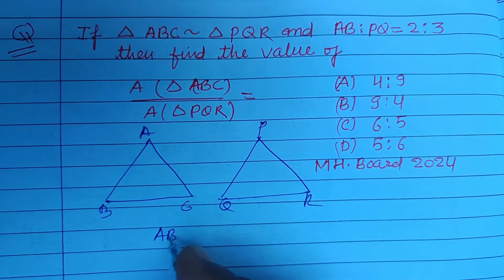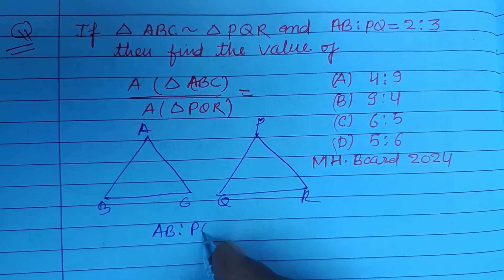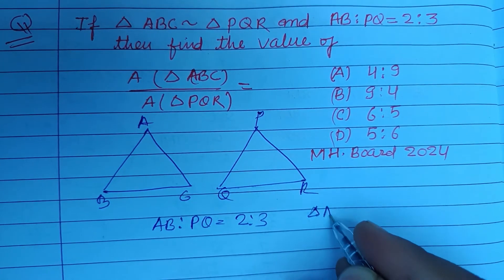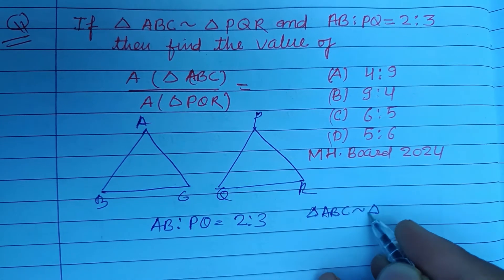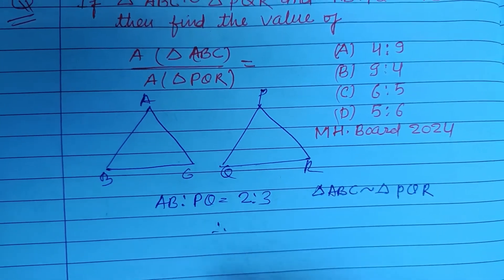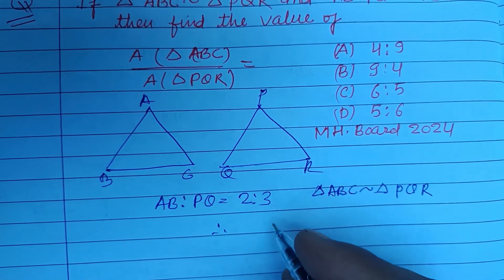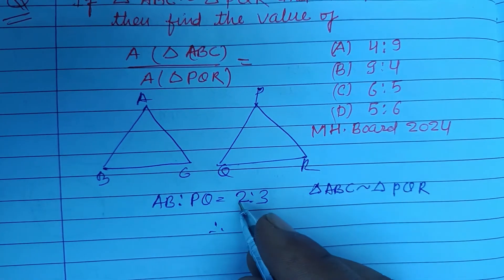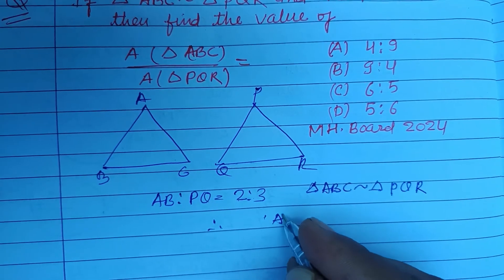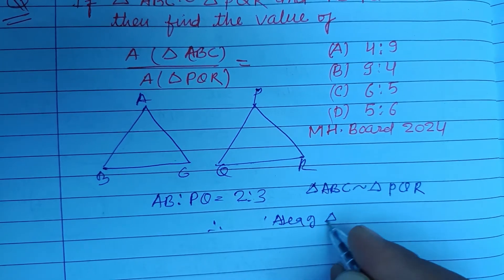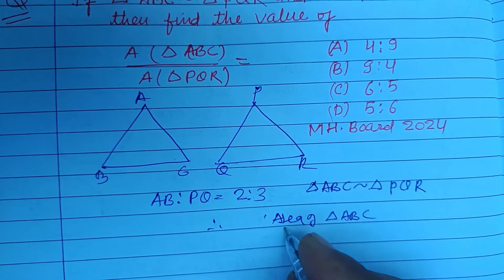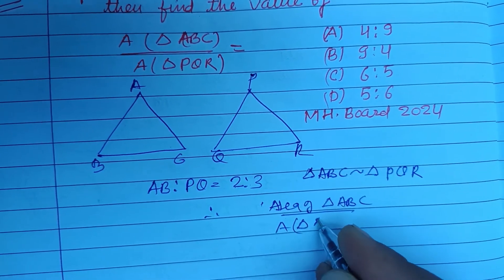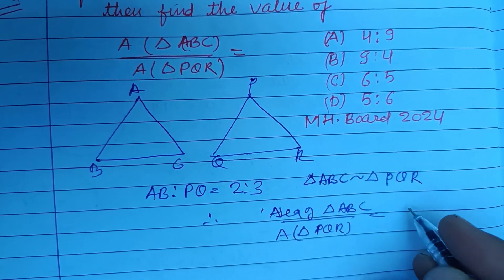AB ratio PQ is given to us as 2 ratio 3, and triangle ABC is similar to triangle PQR. Therefore, their respective sides have the ratio 2 ratio 3. So, area of triangle ABC upon area of triangle PQR is equal to the square of their respective sides ratio.